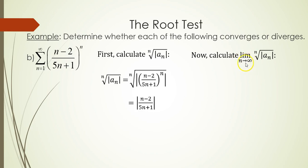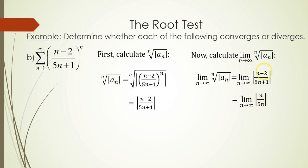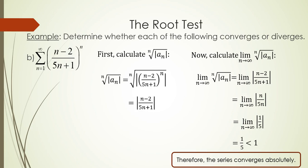Now we calculate the limit as n goes to infinity of the absolute value of (n minus 2) over (5n plus 1). The most dominating term on top is n and on the bottom is 5n, so the limit simplifies to 1/5. Since 1/5 is less than 1, by the root test the series converges absolutely.